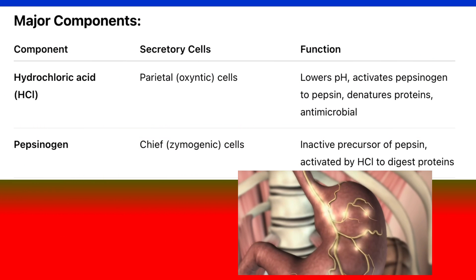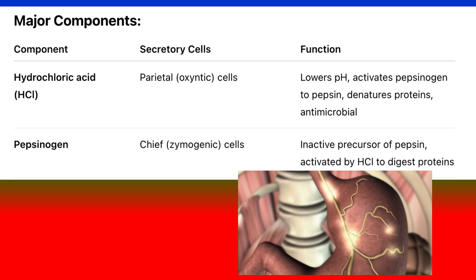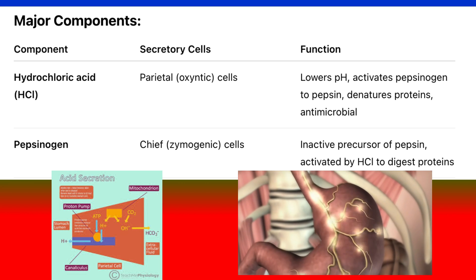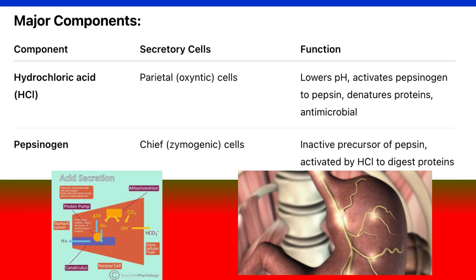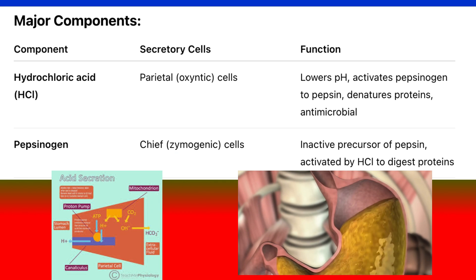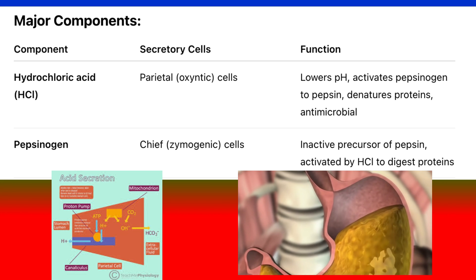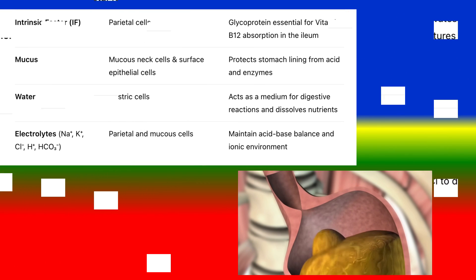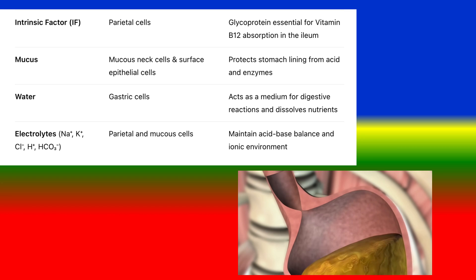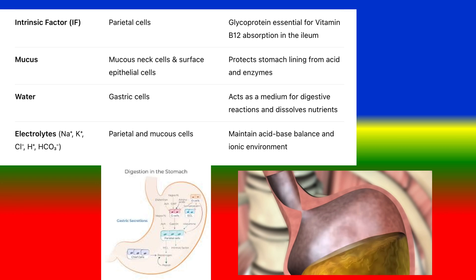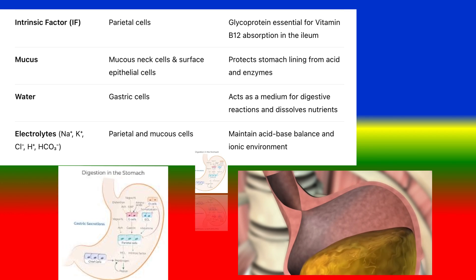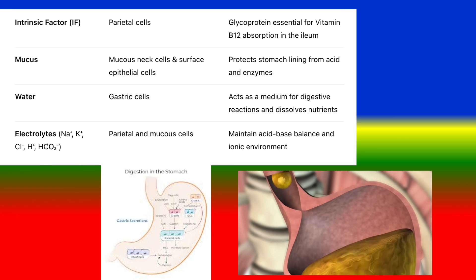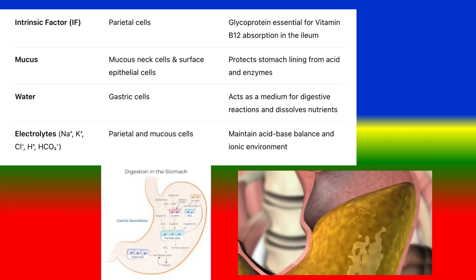Major components and their secretory cells and functions: Hydrochloric acid (HCL) is secreted by parietal (oxyntic) cells — it lowers pH, activates pepsinogen to pepsin, denatures proteins, and has antimicrobial action. Pepsinogen is secreted by chief (zymogenic) cells — an inactive precursor of pepsin, activated by HCL to digest proteins. Intrinsic factor is secreted by parietal cells — a glycoprotein essential for vitamin B12 absorption in the ileum. Mucus is secreted by mucus neck cells and surface epithelial cells — protects the stomach lining from acid and enzymes. Water, secreted by gastric cells, acts as a medium for digestive reactions and dissolves nutrients. Electrolytes (Na⁺, K⁺, Cl⁻, HCO₃⁻) secreted by parietal and mucus cells maintain acid-base balance and ionic environment.